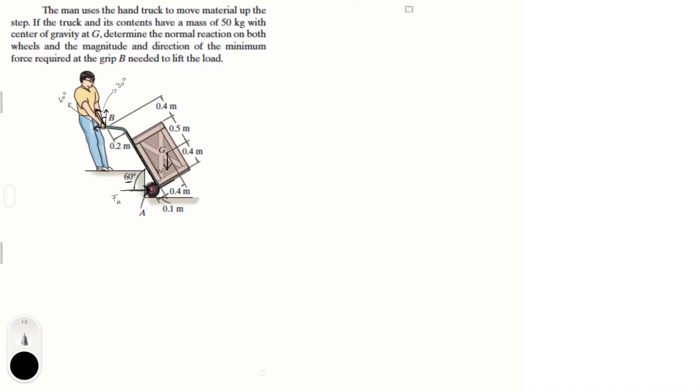Now that we have our free body diagram, let me not forget the weight, which is what's making everything difficult. You know that the weight is 50 kilograms times the acceleration of gravity, 9.81 meters per second squared, so the weight is equal to 490.5 Newtons.